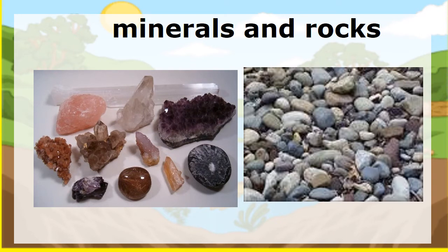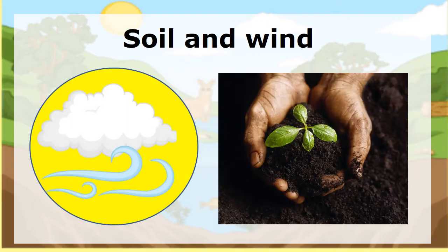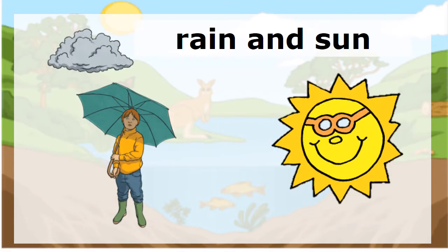Minerals and rocks — we know that minerals include diamonds and rubies, and we know what rocks are. We also have our soil and our wind, our rain and our sun. These are all natural resources.